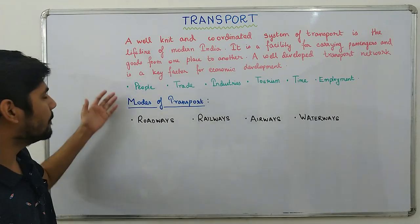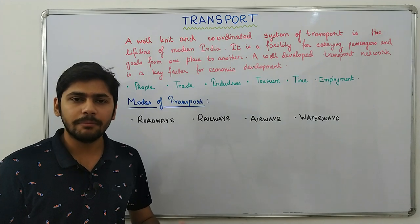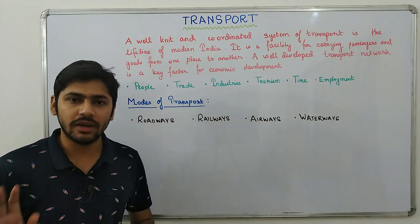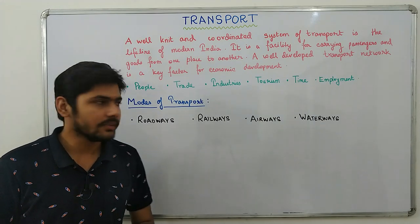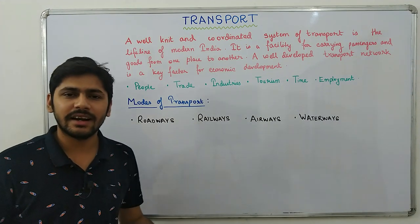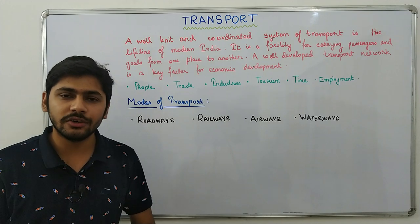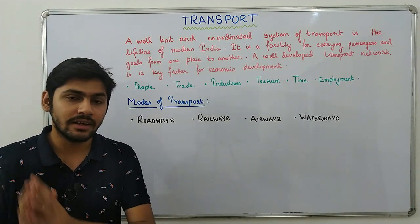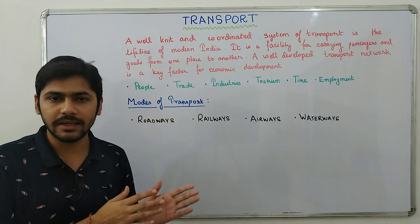First, people. In the modern times of globalization, people have to move from one place to another regularly, and to do that they need transport. Then trade — buying and selling of goods. If you buy and sell goods, you need to move those goods from one place to another, and transport helps you do that.